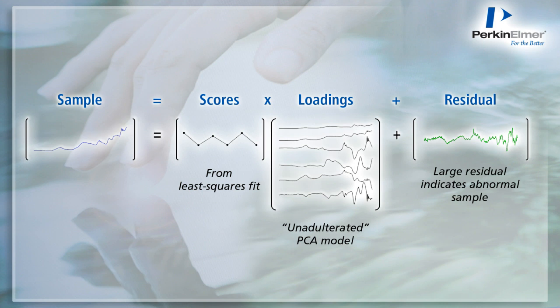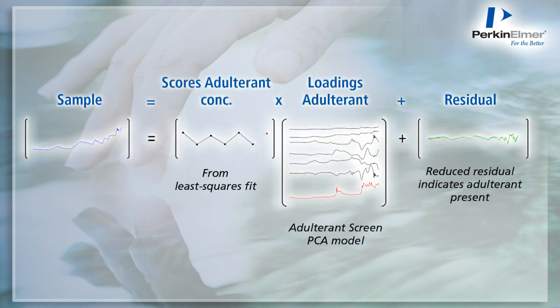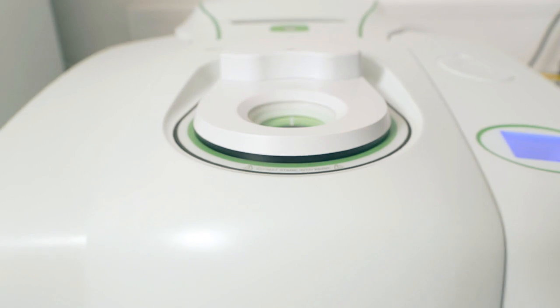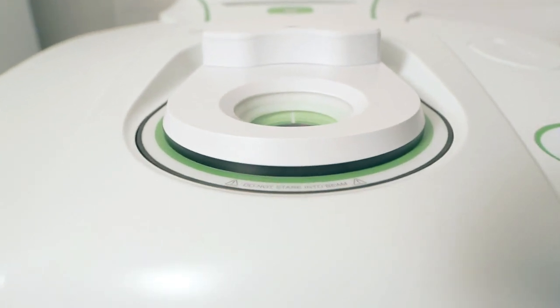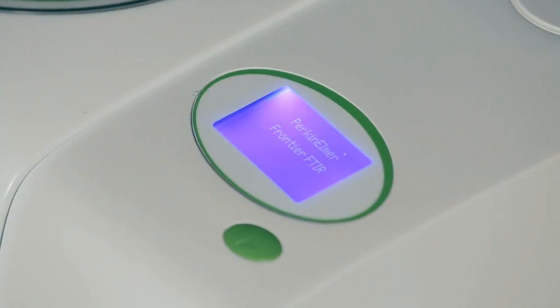Then we see how well the sample spectrum fits into this model. If it's significantly contaminated, there will very likely be a large residual. Next, the software runs through the library of adulterant spectra and includes each one into the model. If as we do so the fit to the sample spectrum greatly improves, that indicates that the adulterant may be present in the sample. The advantage of this approach is that we improve sensitivity by using the adulterant spectrum, but it doesn't require us to prepare a large number of standard samples for each adulterant, meaning we can cast the net much wider.